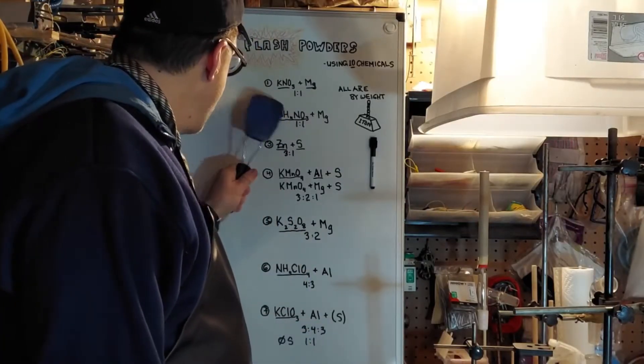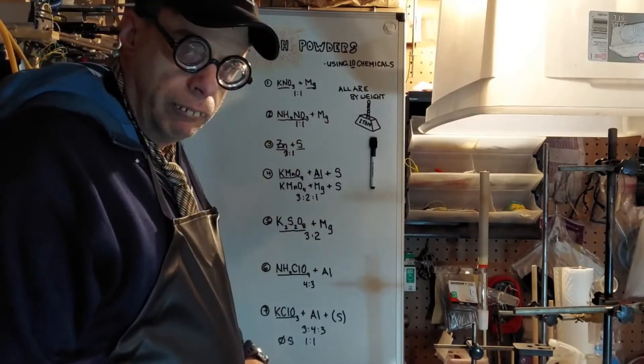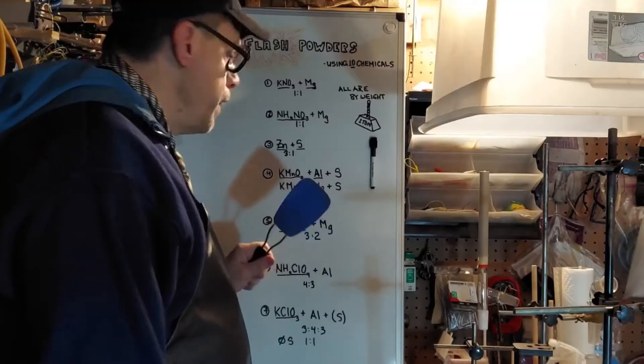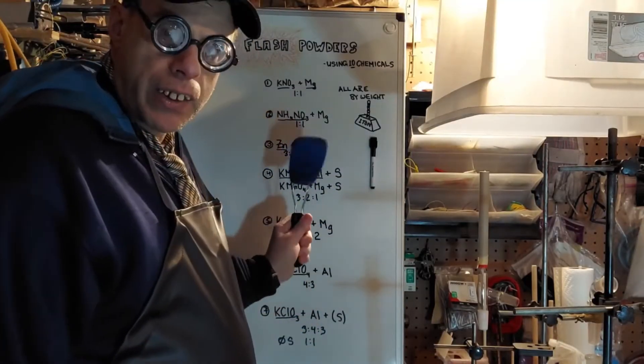Next one, ammonium nitrate, magnesium, also one to one. That's by weight. Zinc and sulfur. Now that gets a little tricky because it's three to one. You need three parts zinc and one part sulfur.